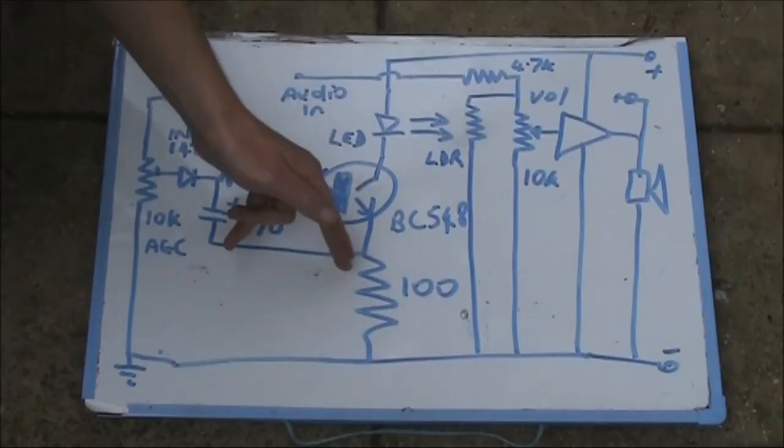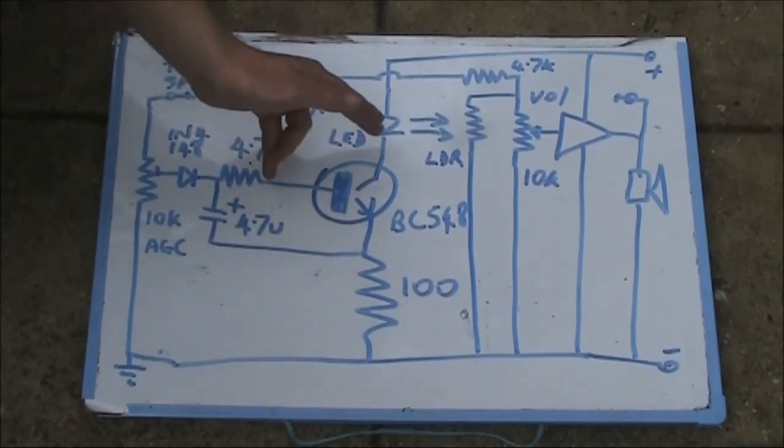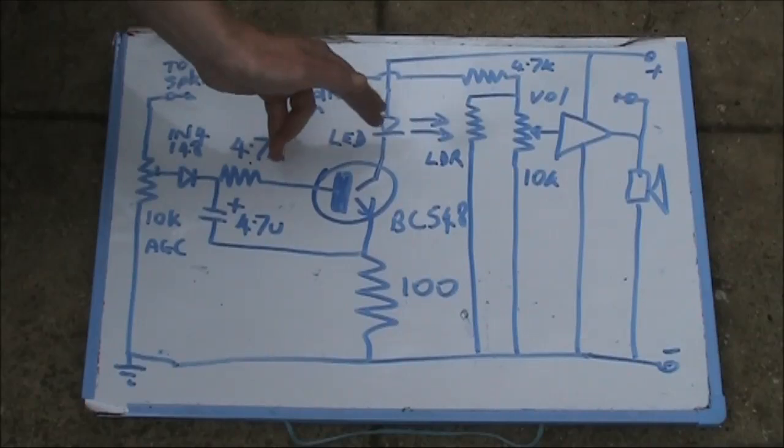The 100 ohm resistor here provides some current limiting. If it wasn't there, the current would be too high and the LED may burn out.